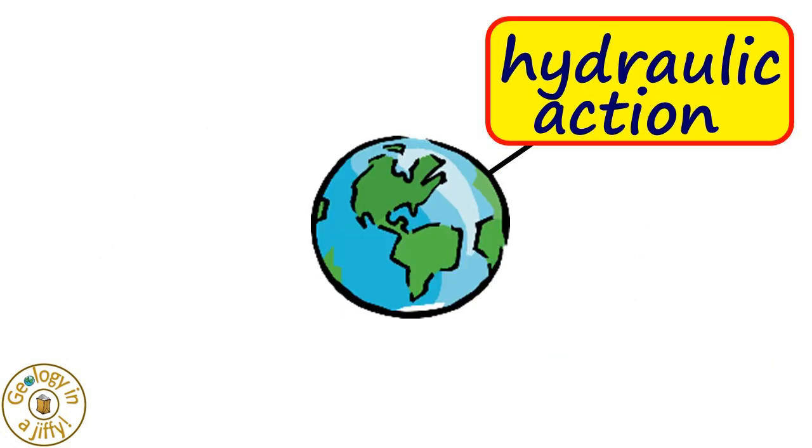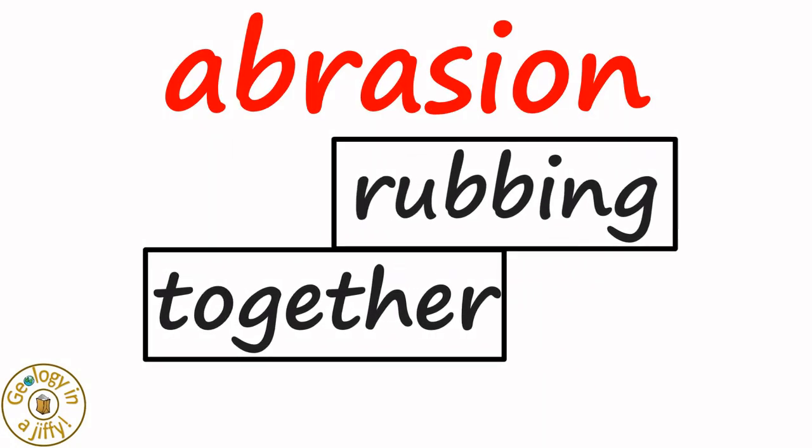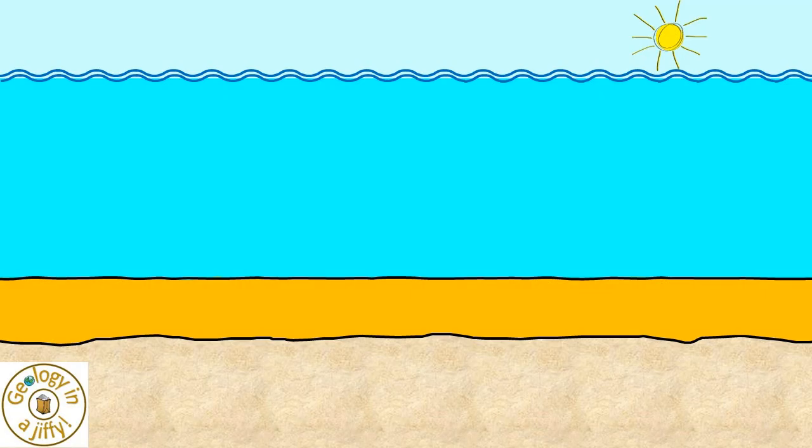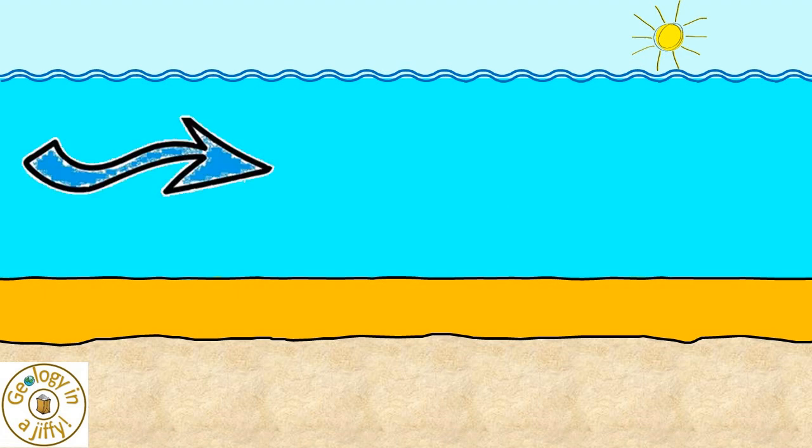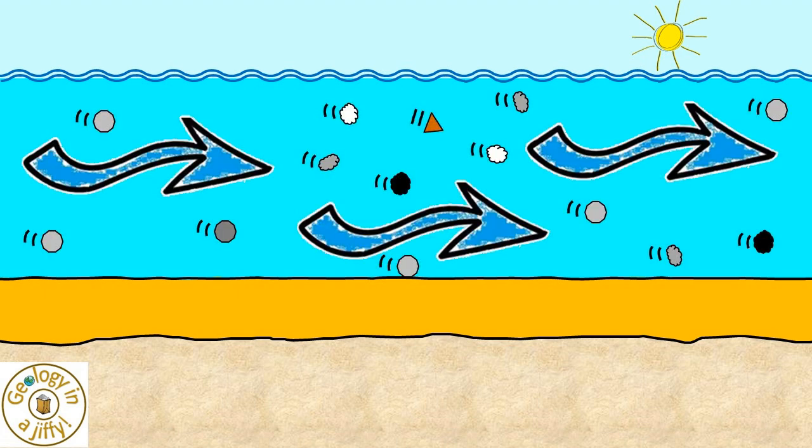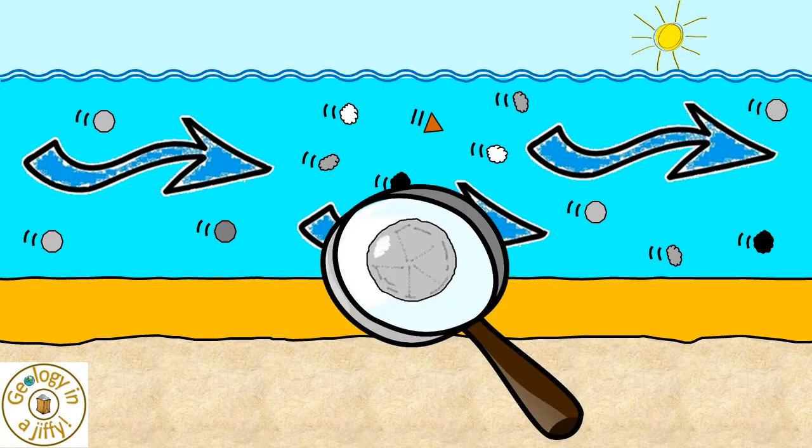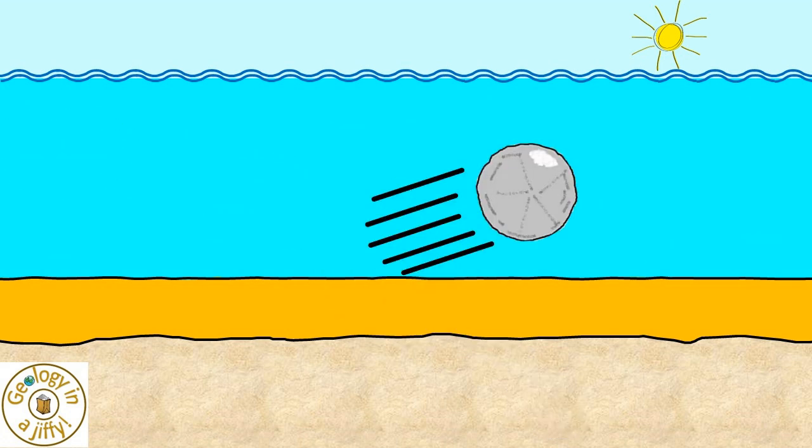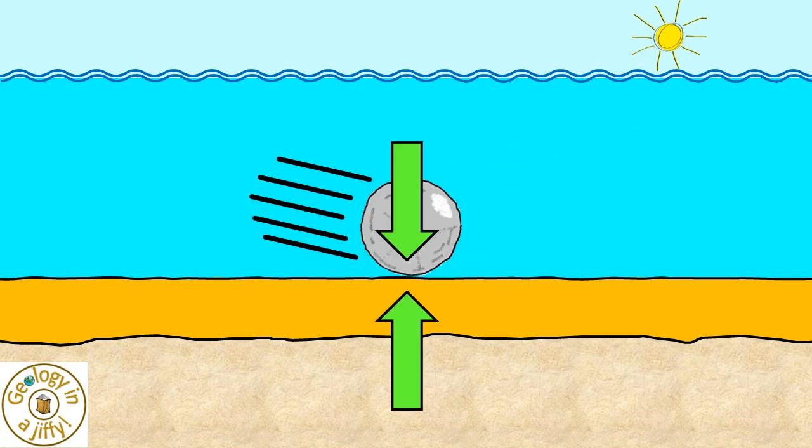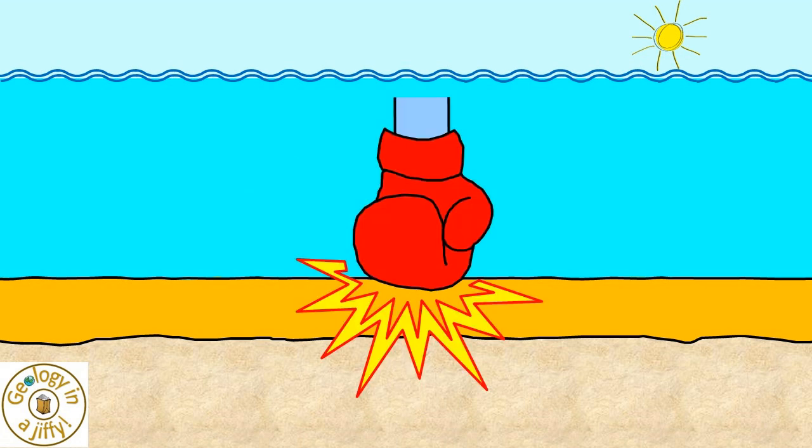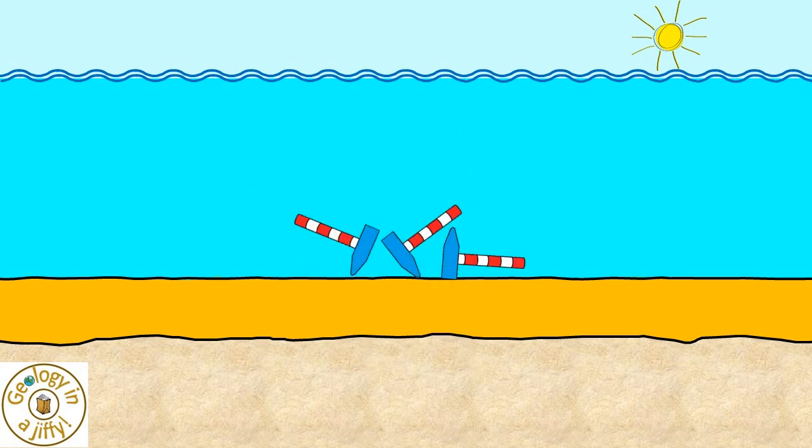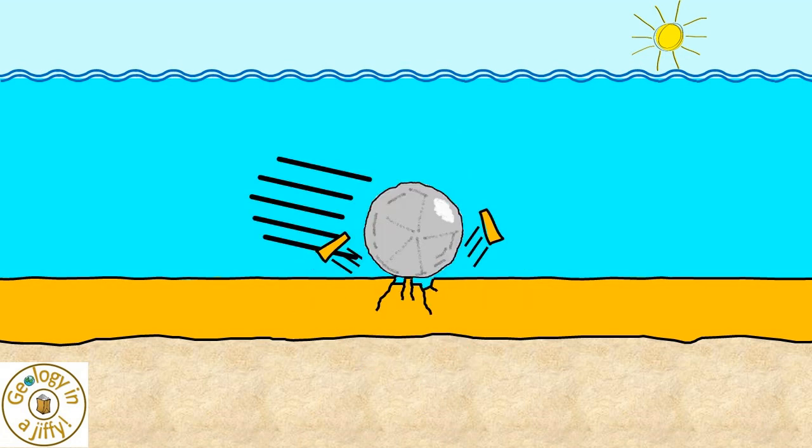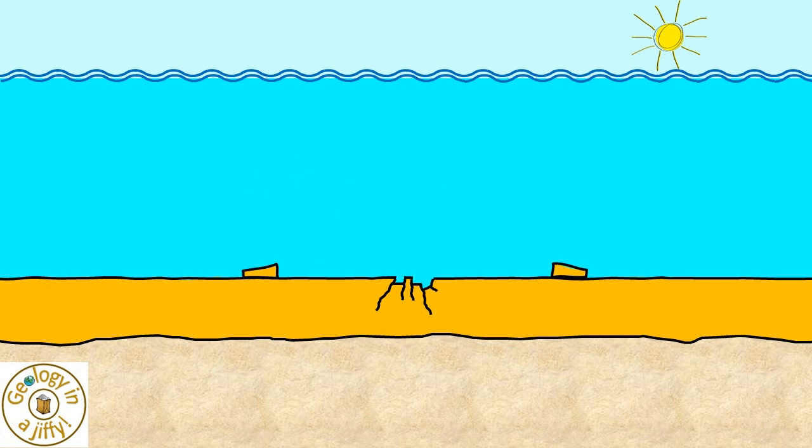Our second erosive process is abrasion, or the rubbing together of rocks, which also leads to erosion. Take this river or seabed with water flowing across it, carrying sediment. If we study a single grain of rock, it moves along with the current, bouncing off the riverbed. At the point where the grain hits the riverbed, erosion happens as the grain wears away the riverbed, leaving a hole or broken pieces of bedrock.